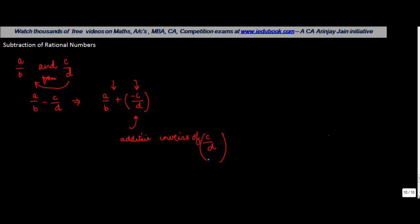So let us see some practical questions on this. Suppose you were told to subtract 3 upon 4 from 7 upon 4. Now in this case, basically, if you notice, you have to subtract. So you write this as 7 upon 4 minus 3 upon 4.